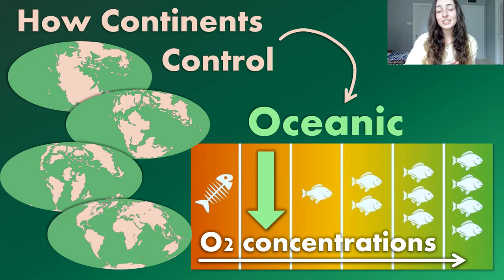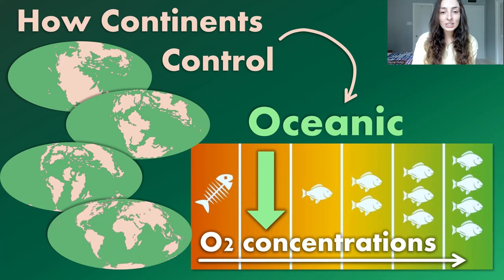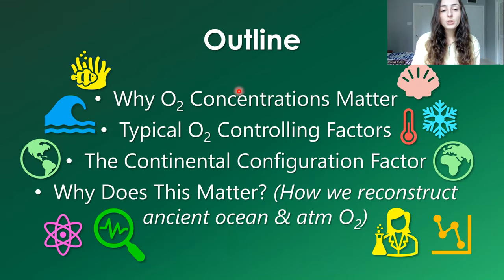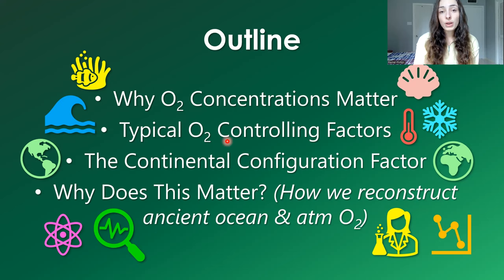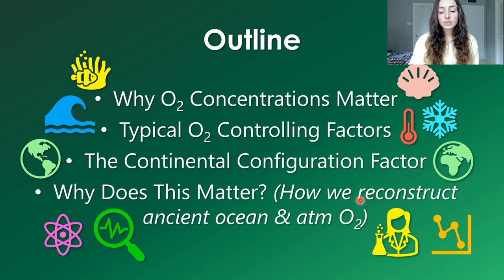I'm exaggerating a tiny bit — it doesn't throw out all of our assumptions, but it definitely changes the way that we interpret how we reconstruct Earth's past. In this video, I'm going to be talking specifically about how continental configurations — how the continents are dispersed across our surface — affects oxygen concentrations in the ocean, which can have a major effect on marine life. I'll start by talking about why studying oxygen concentrations matter, the typical controlling factors, how continental configuration can affect oxygen concentrations, and why this continental control matters for reconstructing ancient oceanic and atmospheric oxygen concentrations.